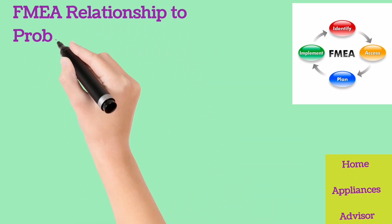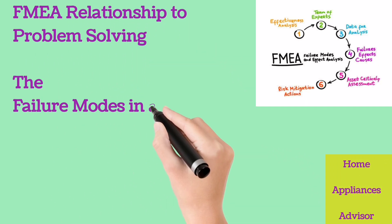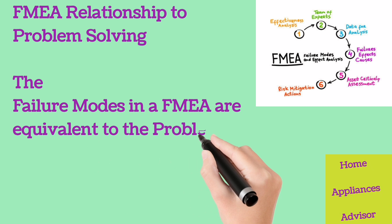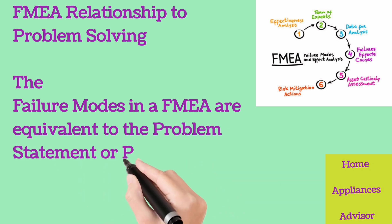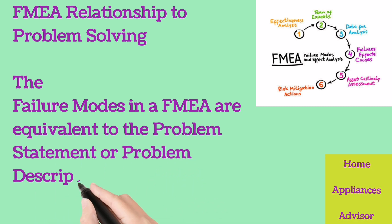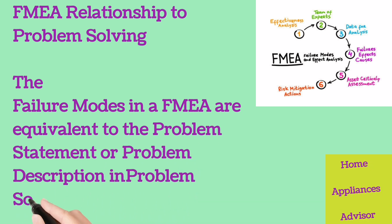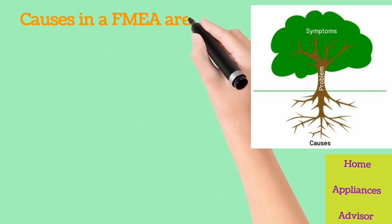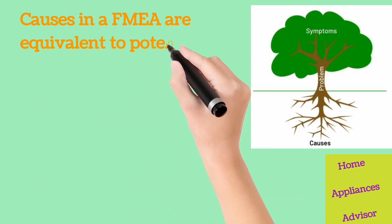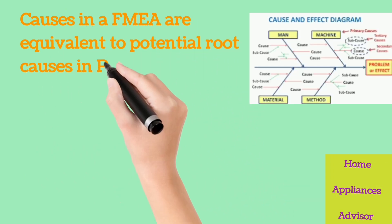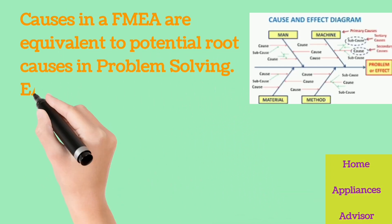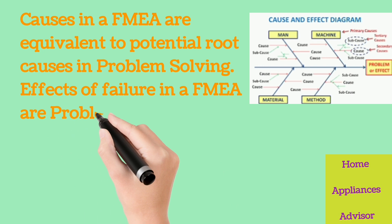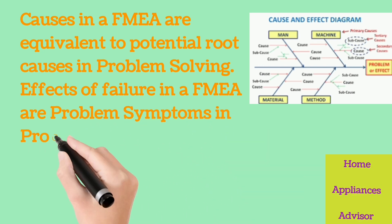FMEA Relationship to Problem Solving: The failure modes in an FMEA are equivalent to the problem statement or problem description in problem solving. Causes in an FMEA are equivalent to potential root causes in problem solving. Effects of failure in an FMEA are problem symptoms in problem solving.